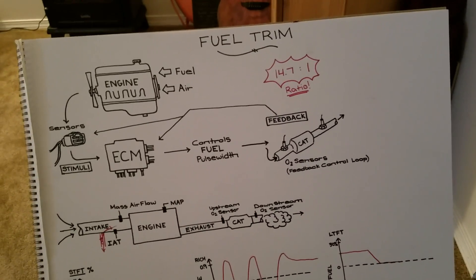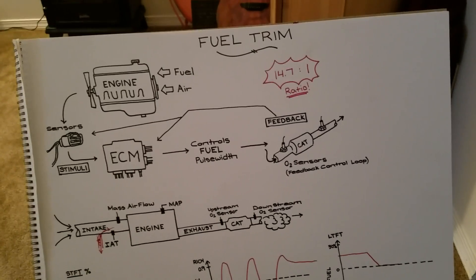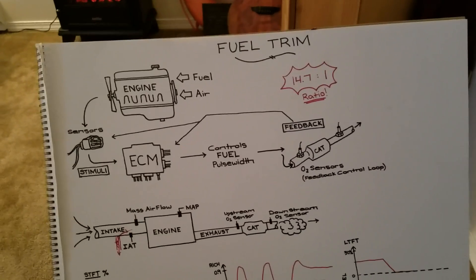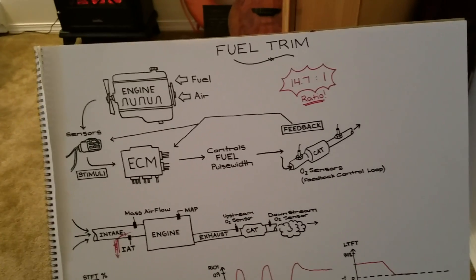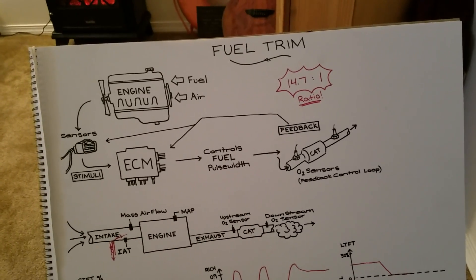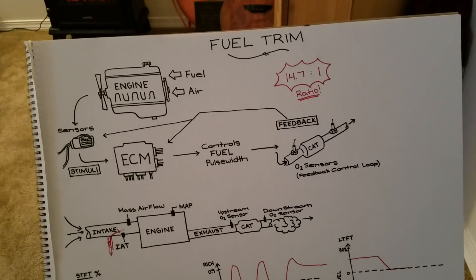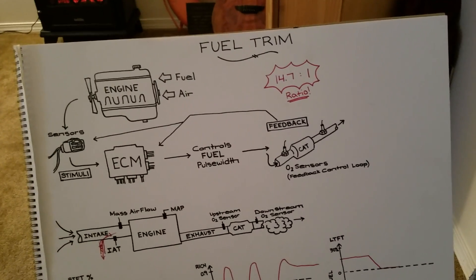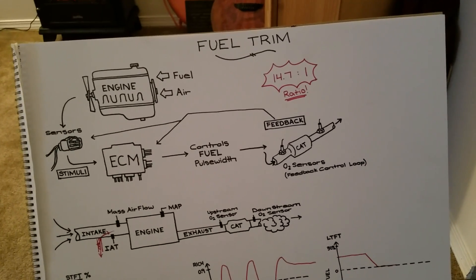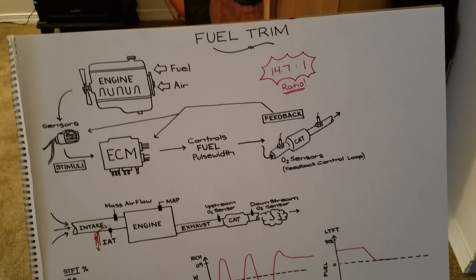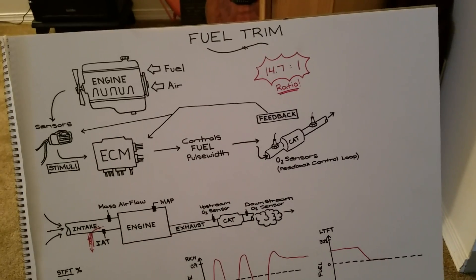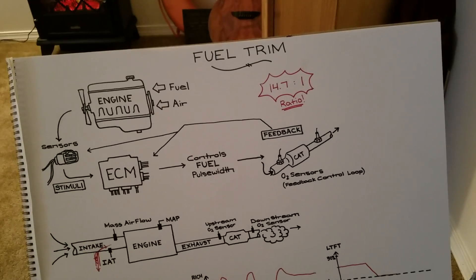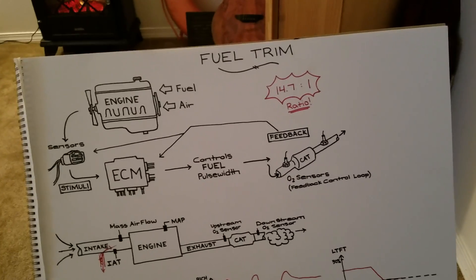The first diagram that I drew, the top one, is a super simple kind of diagram of a feedback control loop. Your ECM, your engine control module or powertrain control module, receives feedback from various sensors and it takes that feedback and controls your fuel pulse width which essentially maintains that ratio. The feedback to what it's been doing is read by the O2 sensors in your exhaust and depending on what the feedback is, is what the computer will do next.